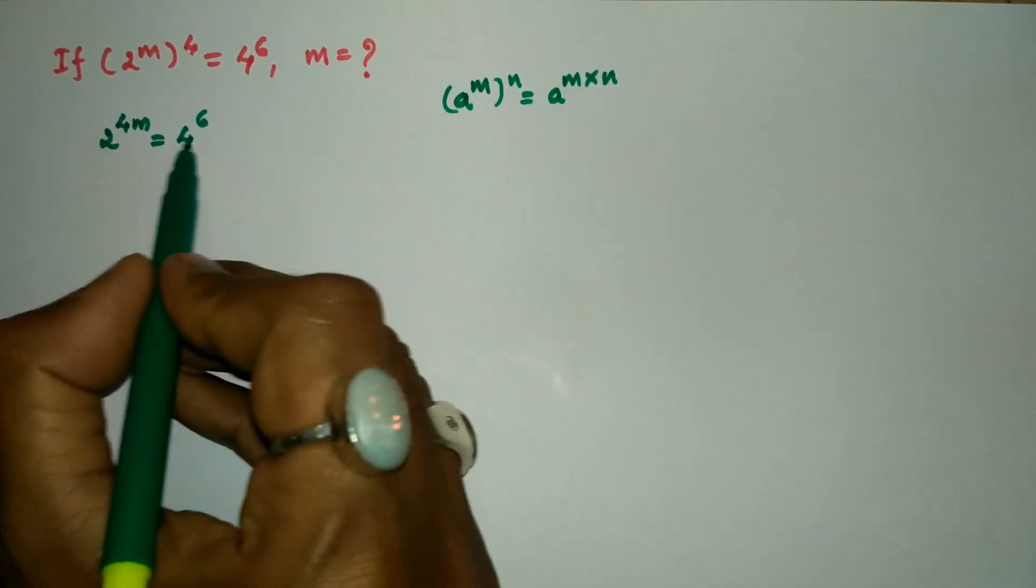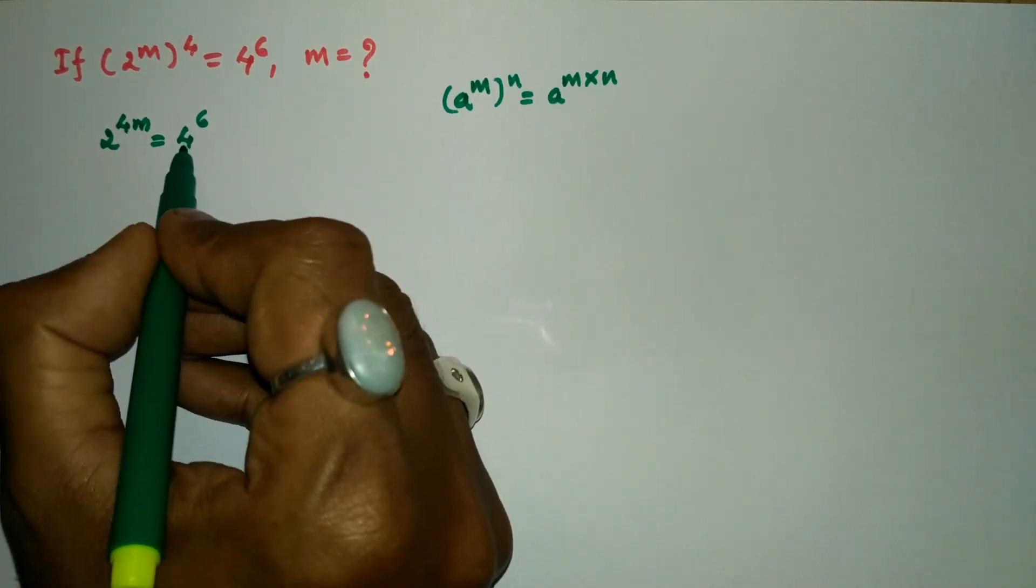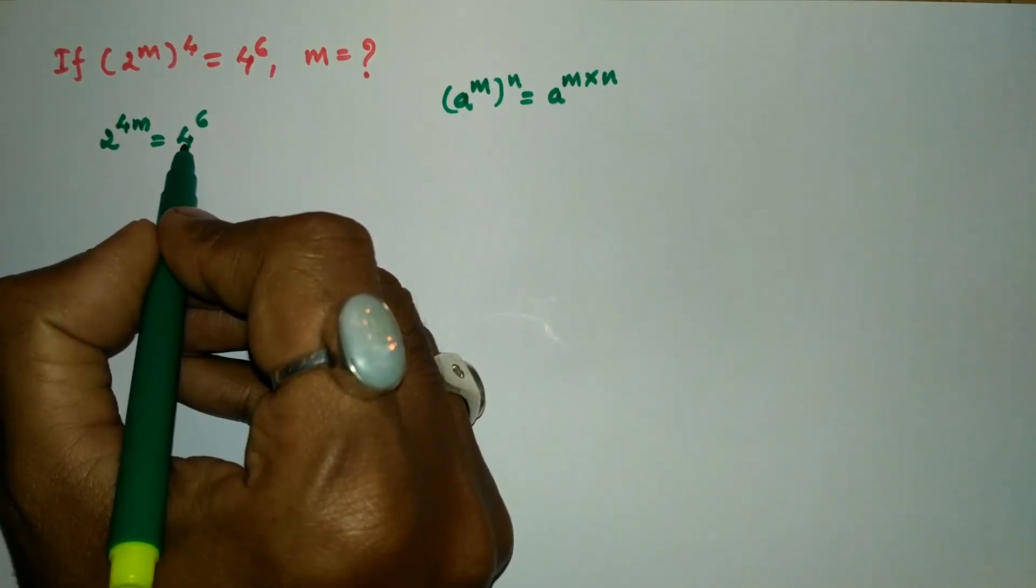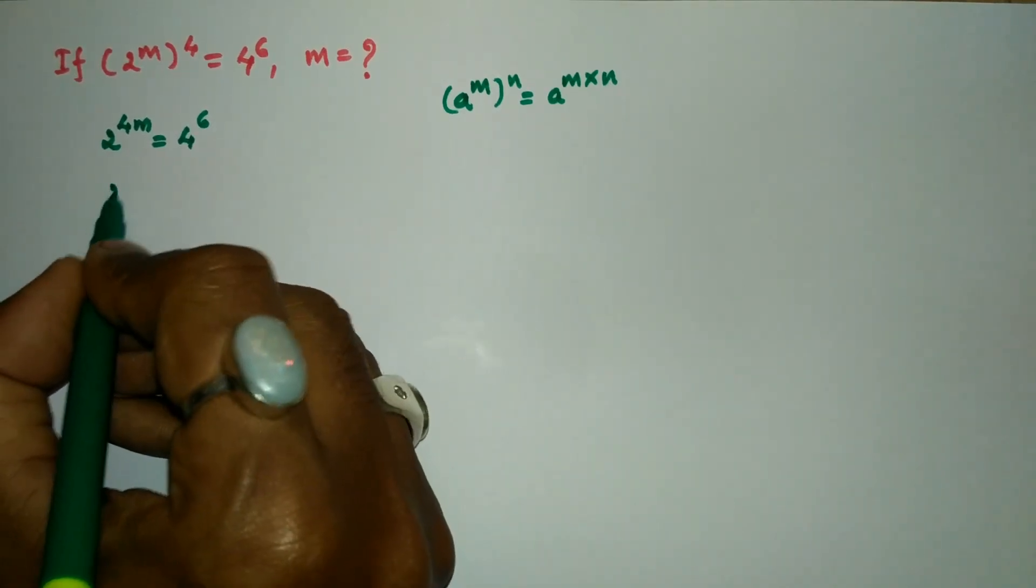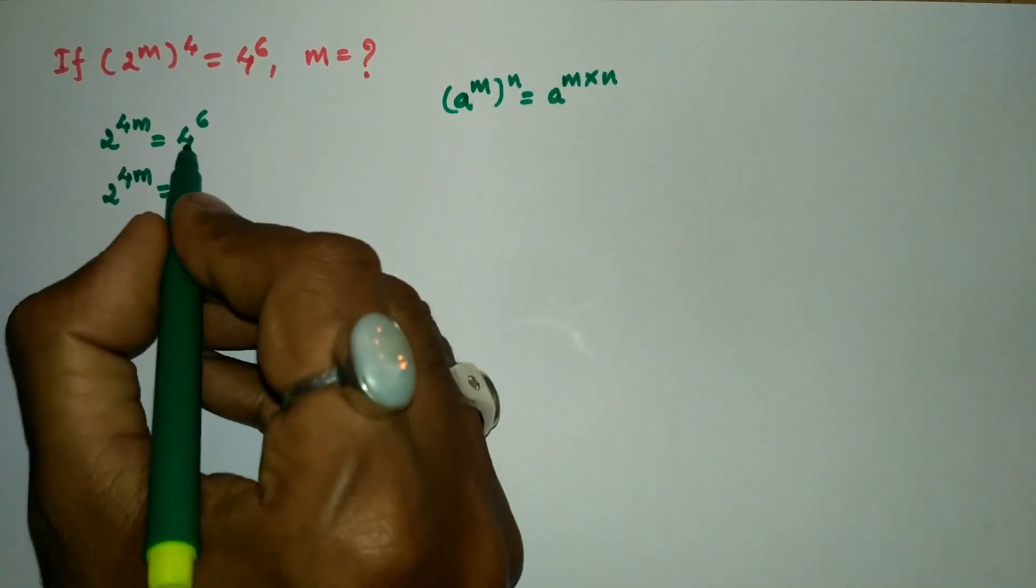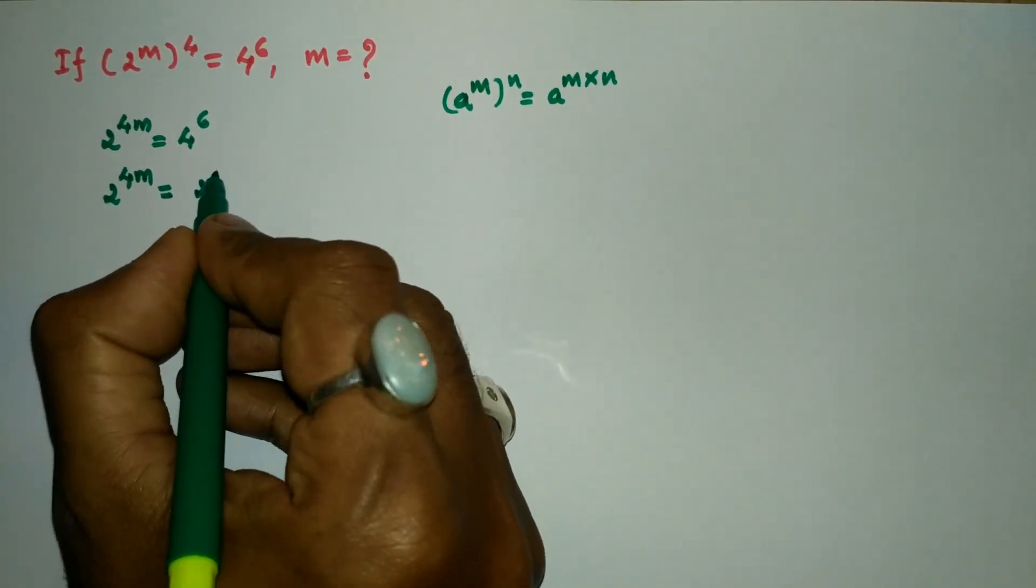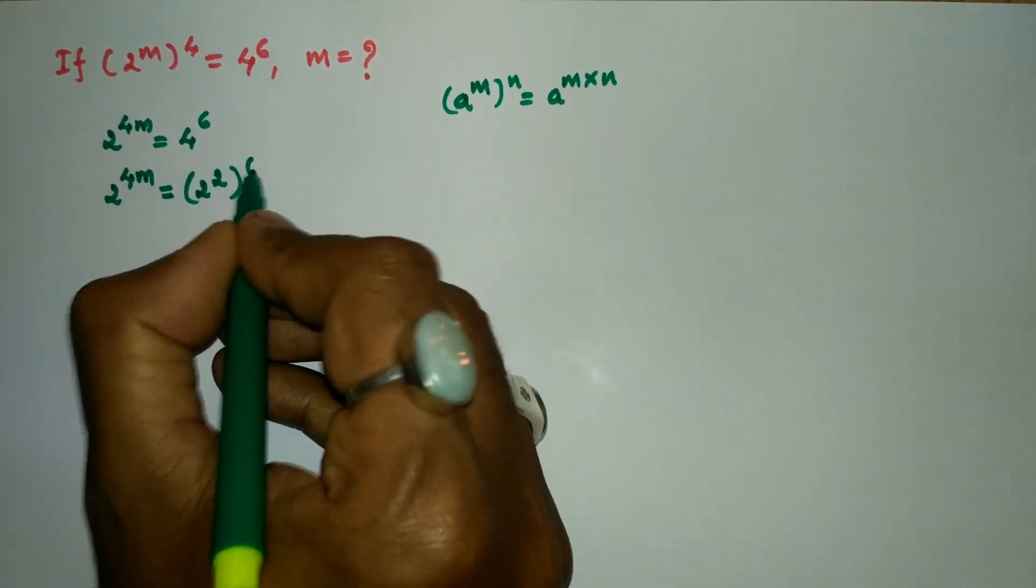I need to make the base of these two terms equal. What we can do here is write this 4 as 2^2. So let us write 2^(4m) equals (2^2)^6.